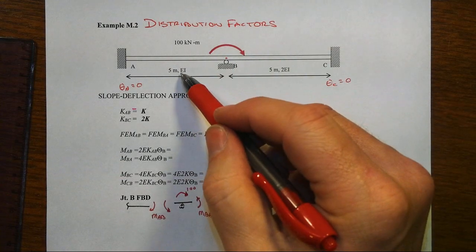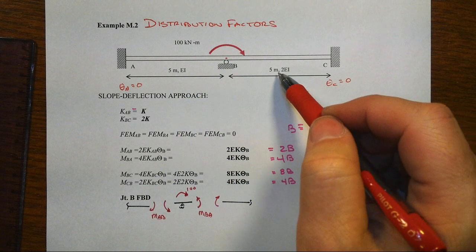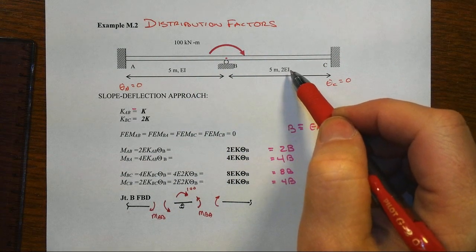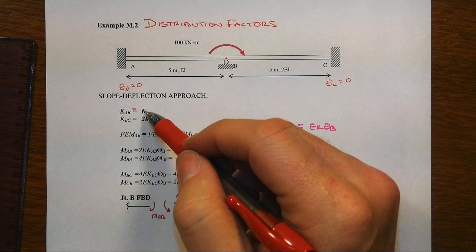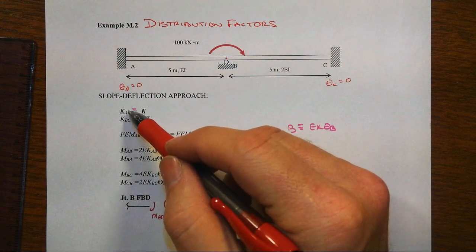Okay, so we've got a left hand span that's 5 meters, EI for the bending rigidity. Second span is also 5 meters, has twice the bending rigidity, such that then K, which is I over L, then is what we've got for KAB, and KBC will be equal to 2K.